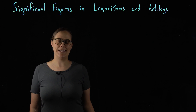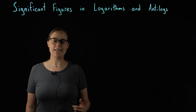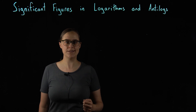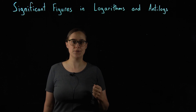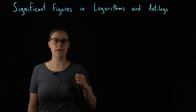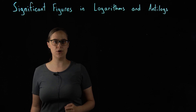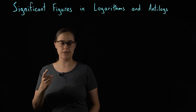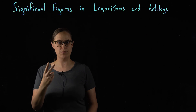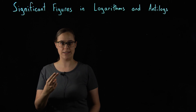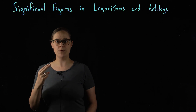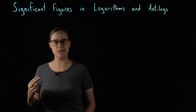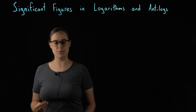Significant figures in logarithms and antilogs. In this video, I will be showing you how to properly round calculated answers after you use logarithms or antilogs. I am assuming that you already know what significant figures are and why they're important, and that you can look at a number and determine how many significant figures are in it. If you do not already know those two things, I recommend watching my first two videos in this playlist before you proceed.